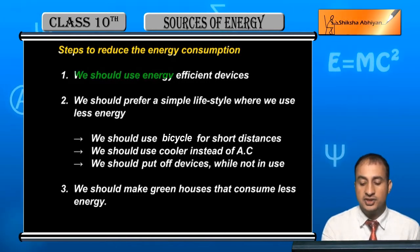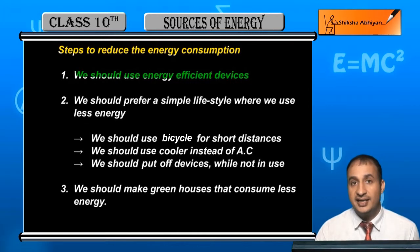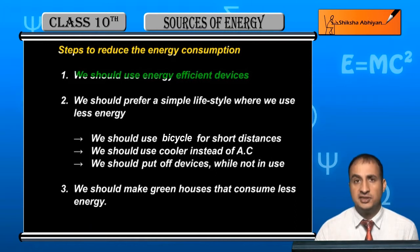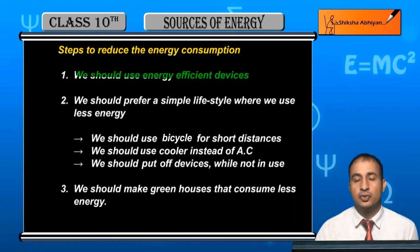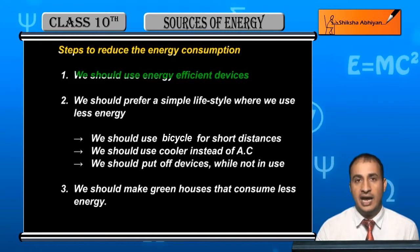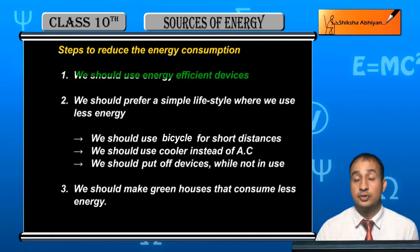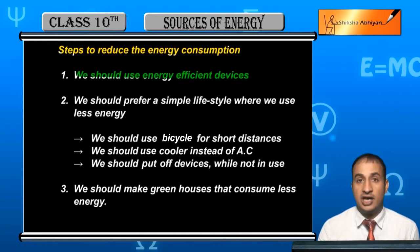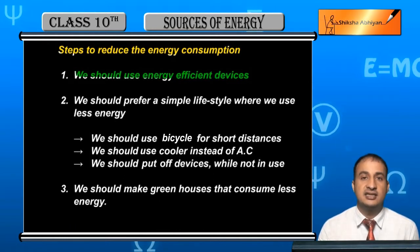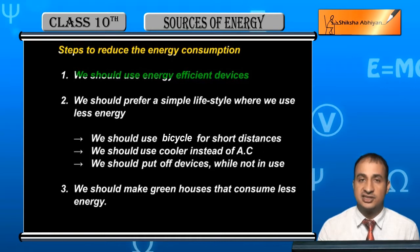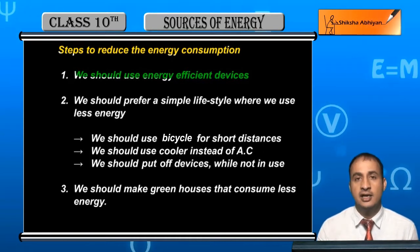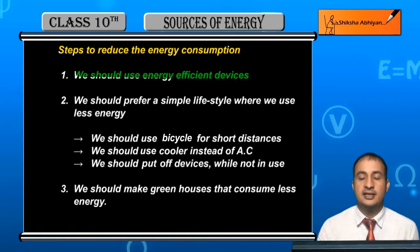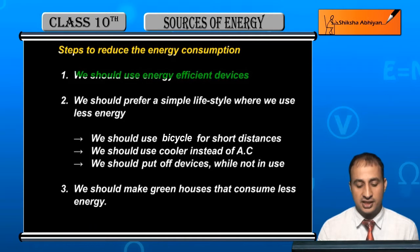We should use energy efficient devices. हमें energy efficient devices use करनी चाहिए. जैसे air conditioner, cooler, lamp, CFL bulbs — इन पर star rating होती है. Star rating यह बताती है कि device कितनी efficient है. जितनी जादा stars उसे मिलेंगे, उतना जादा वो energy का consumption कम करेगा. तो हमें इसी तरह की energy efficient devices का use करना चाहिए.